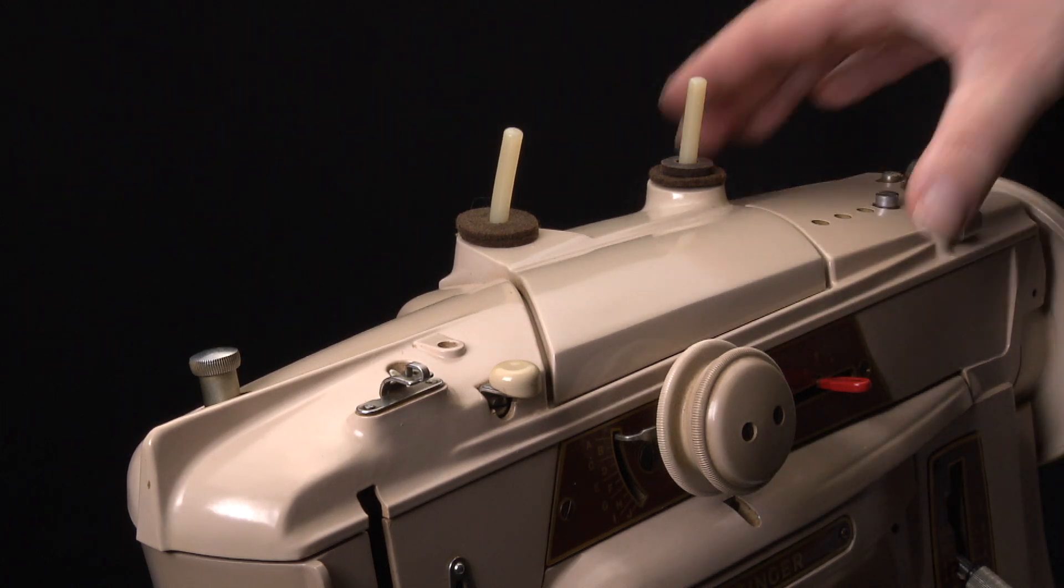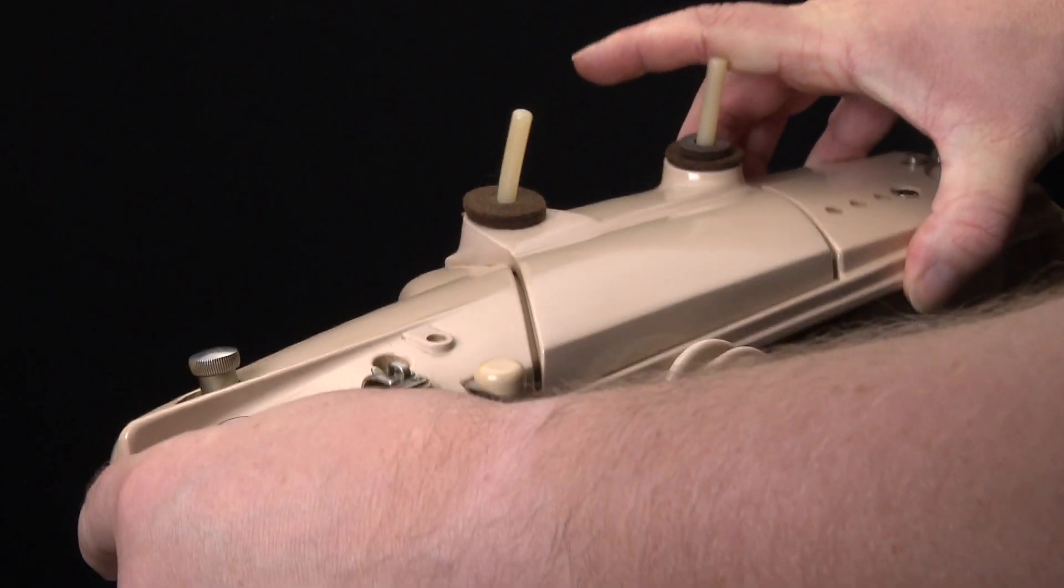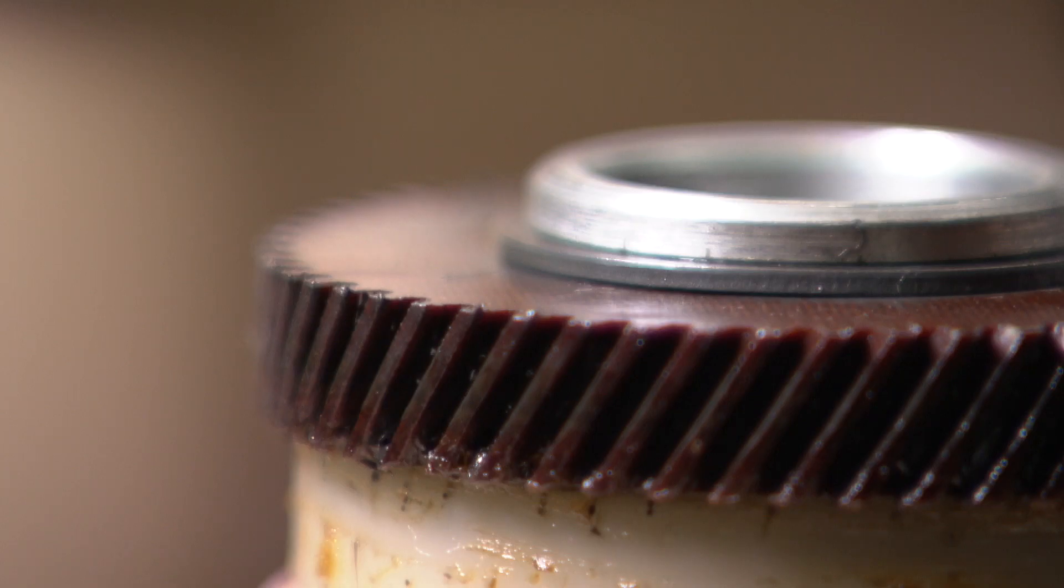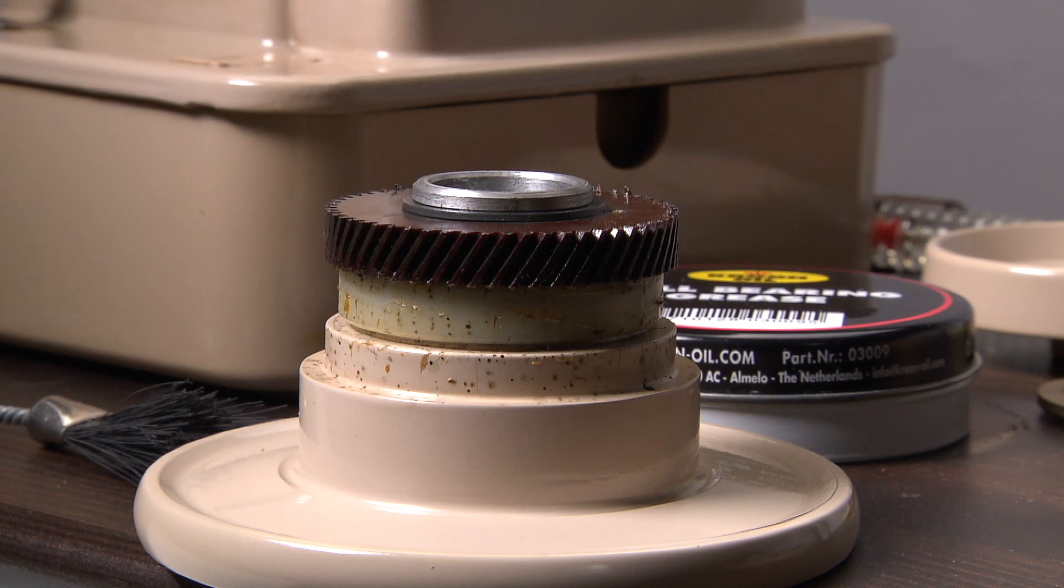By unscrewing these screws you can remove the entire top plate. It's never a bad idea to open and inspect the machine. If needed, you can take some photos as easy reference.